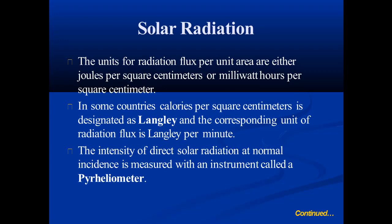The units for radiation flux per unit area are either joules per square centimeter or milliwatt-hours per square millimeter. In some countries, calories per square centimeter is used, which is designated as a langley, and the corresponding unit of radiation flux is a langley per minute.